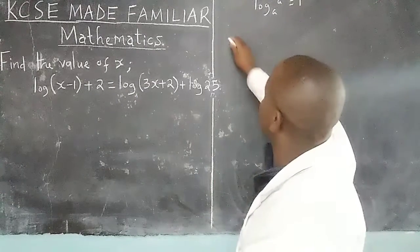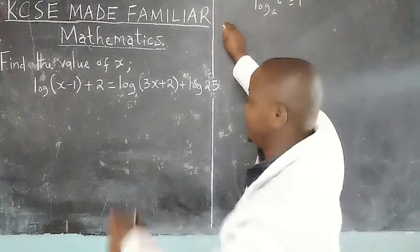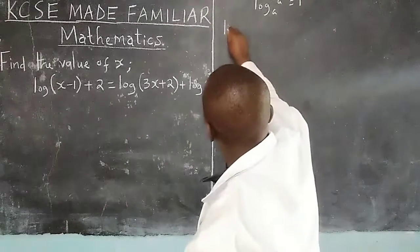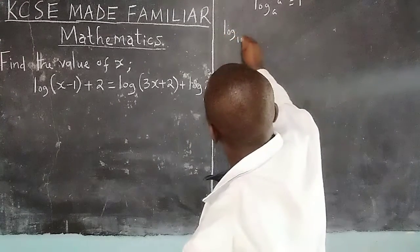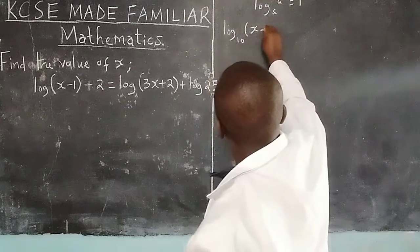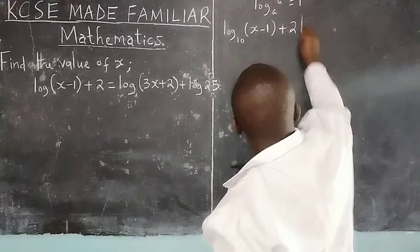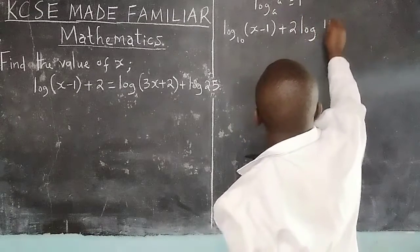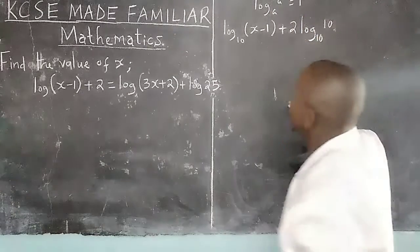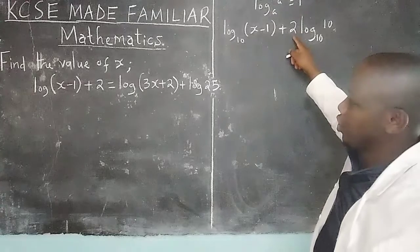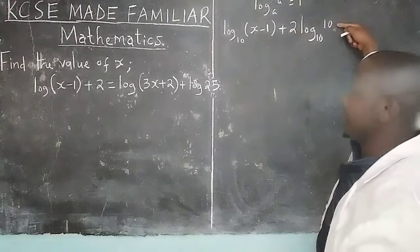So in this case we will have log₁₀(x-1), then plus 2 multiplied by log₁₀(10) such that the value of 2 is not affected since log₁₀(10) is just 1.